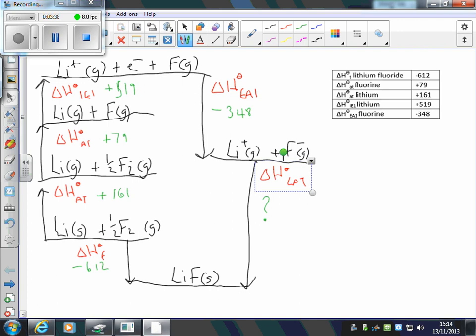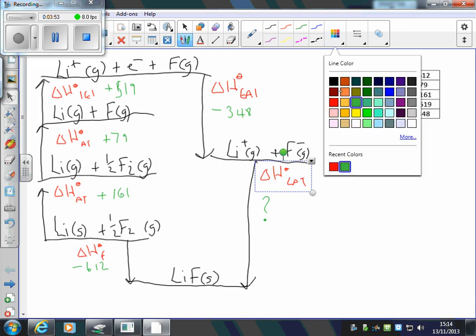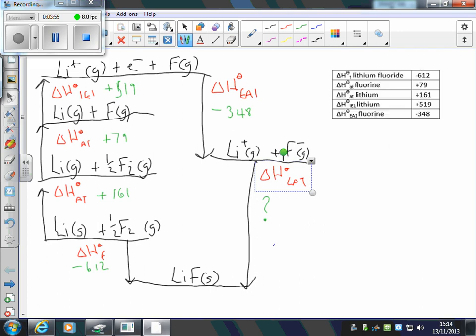Now, to calculate our unknown lattice enthalpy. This is my missing arrow, so I'm going to work in the direction that's opposite to the arrow, going anti-clockwise. The calculation will be: lattice enthalpy equals... I'm going up this arrow, so going against the arrow I change the sign. So it will be plus 348.